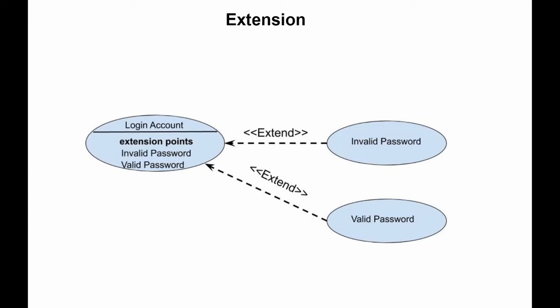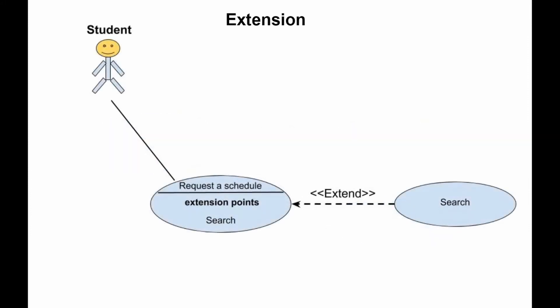Extensions are important because they show additional functionality or system behavior. This type of relationship is used to include optional behavior of the use case that extends the base use case.